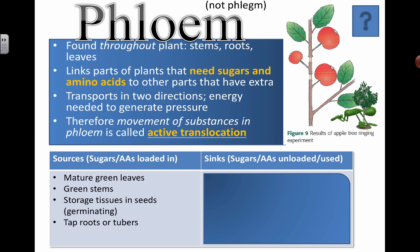Some sources where sugars and amino acids will be loaded in are largely places where photosynthesis is actually going to happen. In mature green leaves where photosynthesis is happening, sunlight is being used to convert carbon dioxide into glucose, and then glucose is turning into larger polysaccharides. Sucrose is a disaccharide, and that's going to be used to move around. So one place where we can load sucrose into the phloem is from these mature green leaves that are factories for photosynthesis. Green stems can also have some extra photosynthesis going on.